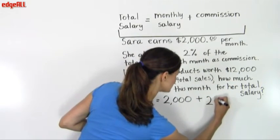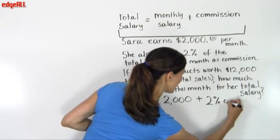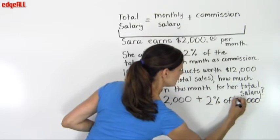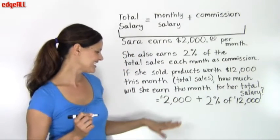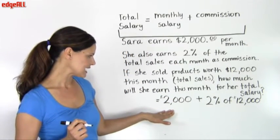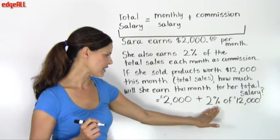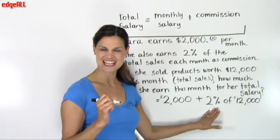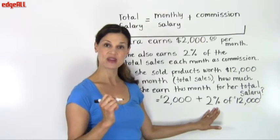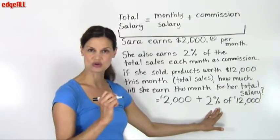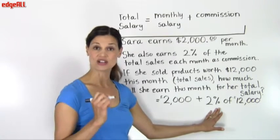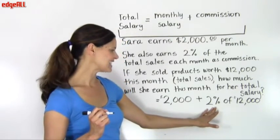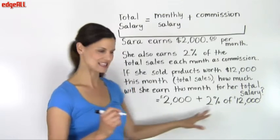Our total salary for Sarah is going to equal her monthly salary, which we know is $2,000, plus we're going to add to that her commission, which is 2% of $12,000. As we learned in our percent lessons, we know that we want to convert our percent to a fraction with 100 in the denominator, so we can rewrite this 2% as 2 over 100, or 2 divided by 100, or 2 hundredths, 0.02.